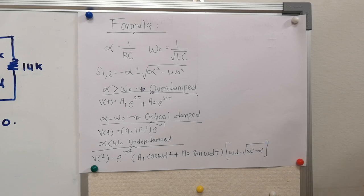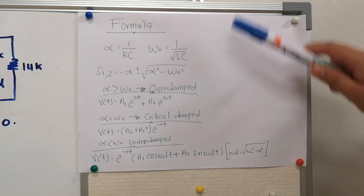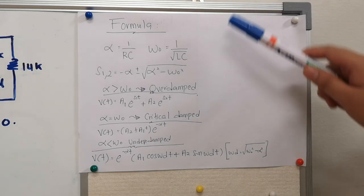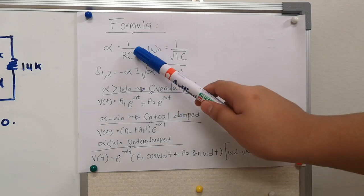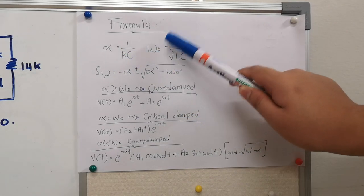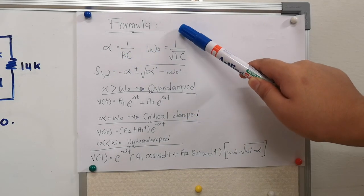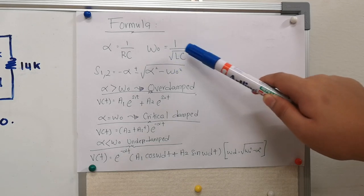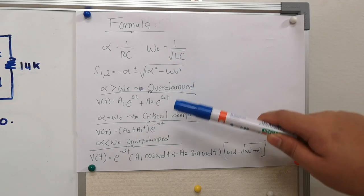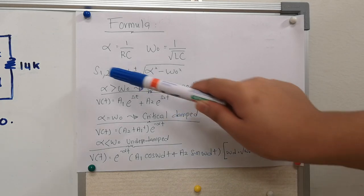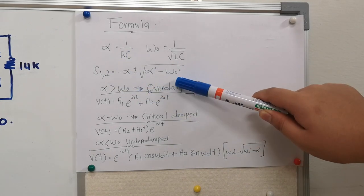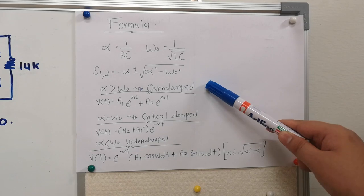This is the formula for a second-order source-free parallel circuit. Alpha is 1 over RC, and omega naught is 1 over the square root of LC. There are three natural responses: when alpha is greater than omega naught, it is overdamped.